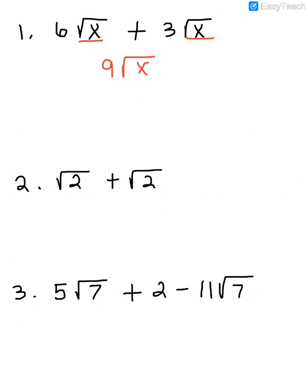In number two, we have the square root of 2 plus the square root of 2. If you remember, when adding or subtracting monomials and we try to add x plus x, there's an understood one in front of the x's, so we get 2x. It's the same way with radicals — there's an understood one in front of every radical. So this is the same as 1 square root of 2 plus 1 square root of 2, which gives us 2 square root of 2.